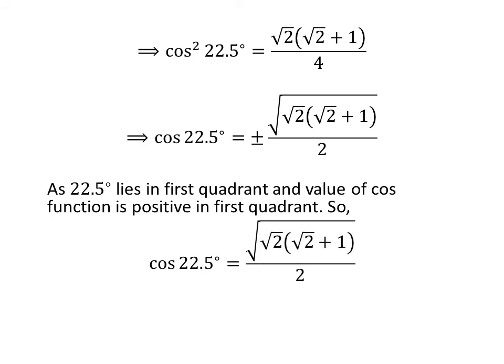As 22.5 degrees lies in the first quadrant and the value of cosine function is positive in the first quadrant, so cosine of 22.5 degrees is equal to square root of square root of 2 times square root of 2 plus 1, upon 2.